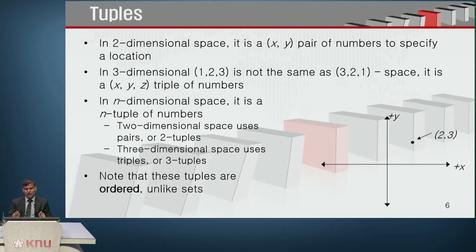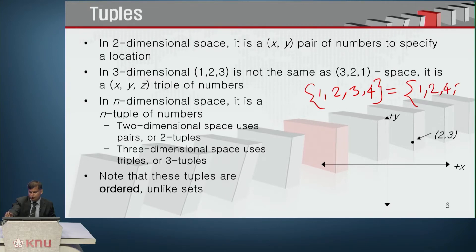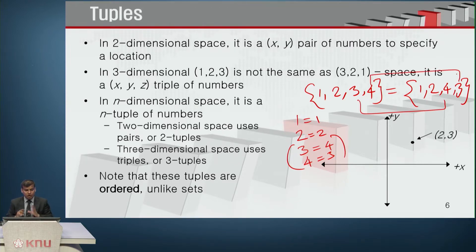Tuples do not behave like sets. As far as tuples are concerned, they must be ordered. If you have a set like {1, 2, 3, 4}, that set is equal to {1, 2, 4, 3} for a normal set, but for tuples the order matters — 1 equals 1, 2 equals 2, but then 3 and 4 are in different positions, so these two tuples cannot be equal. Therefore, tuple equality requires the same elements in the same order.